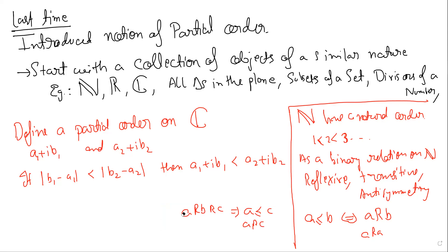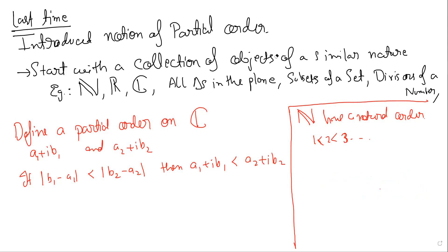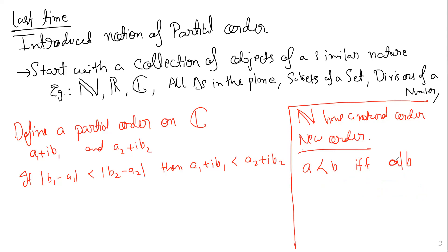But there could be other relations on the natural numbers which also behave like an order. Here I'll put a new relation — a new order. I will say a is less than b if a divides b. This is the criterion for my less-than, a new notion of big and small based on divisibility. Not every two elements are related because three doesn't divide five and five doesn't divide three, but it has the other properties: a divides b and b divides c implies a divides c.